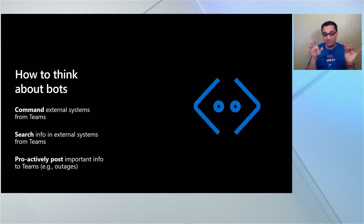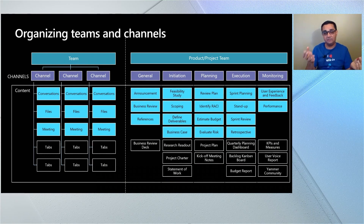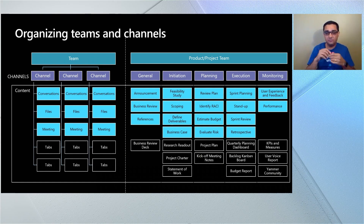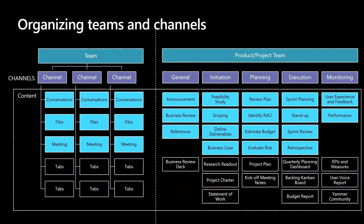So far we talked about how to think about Microsoft Teams among all the apps, and how to think about teams and channels and how to bring context with apps. Now let's map these ideas to software engineering. Here are some standard channels you might have. A general channel for announcements and business reviews. An initiation channel for feasibility studies and scoping discussions. A planning channel for dashboards, plans, budgets, and risks. An execution channel where sprint planning, stand-ups, and retrospectives happen. And a monitoring channel for bugs, user experience issues, and performance.